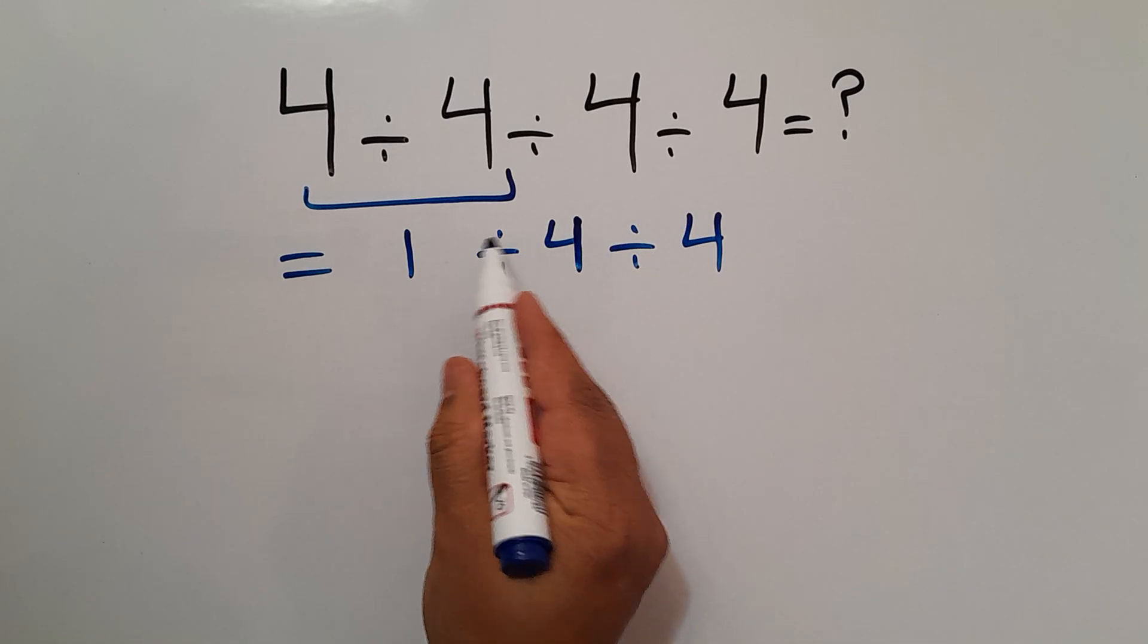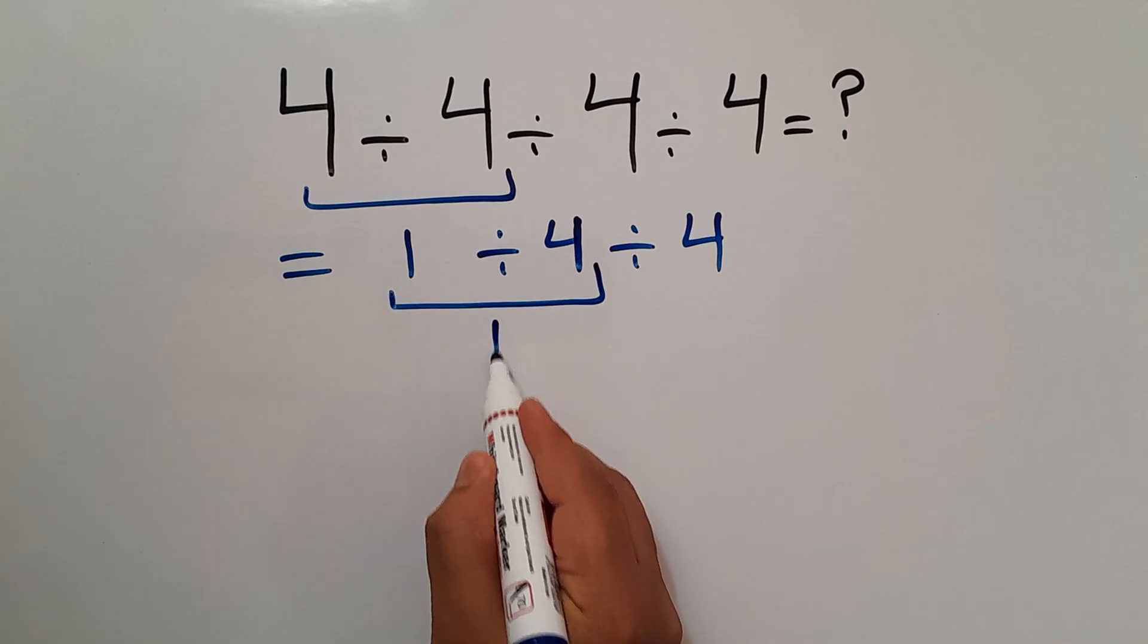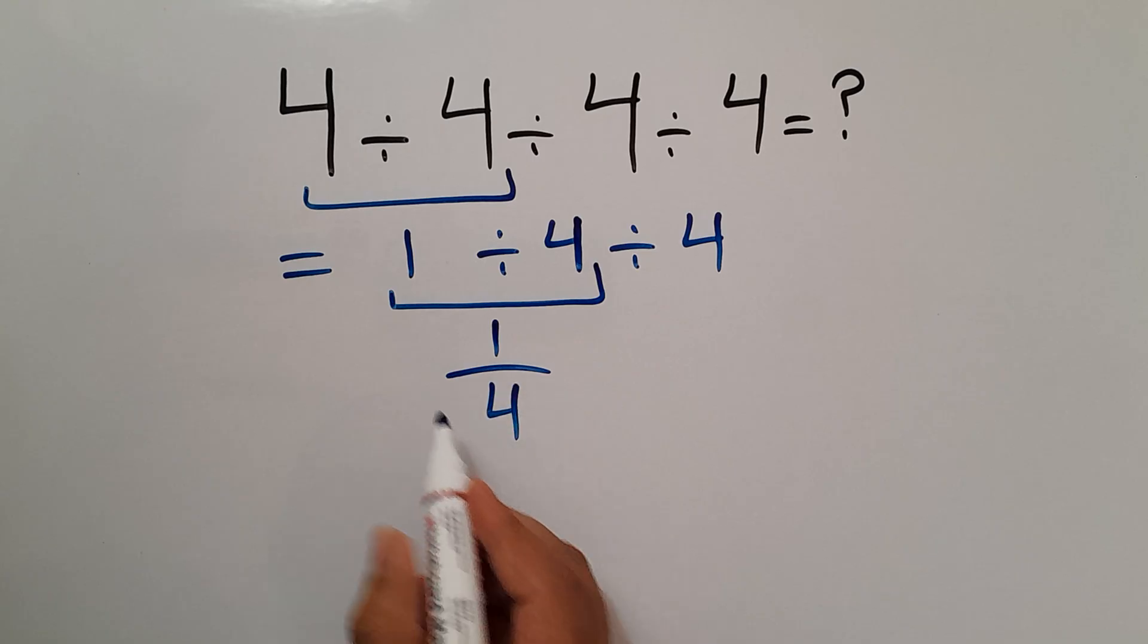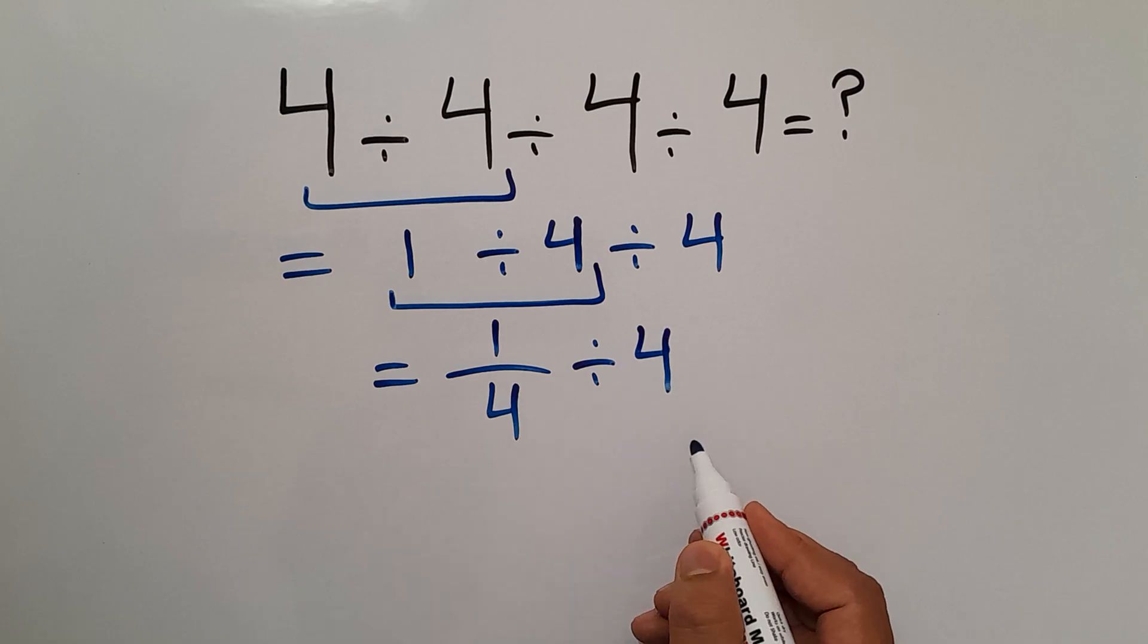Okay, now this division, 1 divided by 4, we can write 1 over 4. So we have 1 over 4 divided by 4.